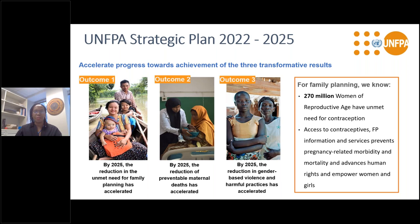UNFPA is the UN agency responsible for sexual and reproductive health. Our new strategic plan came into effect this year. We have three transformative goals: to end unmet need for family planning, end preventable maternal deaths, and end gender-based violence and harmful practices. Approximately 270 million women aged 15 to 49 have unmet need for contraception, and access to contraceptives prevents pregnancy-related morbidity and mortality, advances human rights, and empowers women and girls.